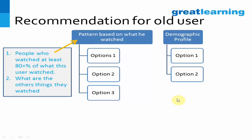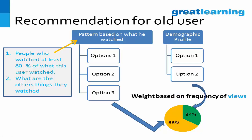You can have some recommendations coming from the viewing pattern and some from the demographic profile. The weight given to each depends on how frequently the user has watched in the past two months. If someone has watched 30 times, they are a regular visitor — give more weight to their viewing pattern. If someone has only visited twice or three times, give more weight to their demographic profile, since you don't have enough of their viewing history. So again, you discovered a pattern based on user profile and viewing pattern, and presented them a choice.